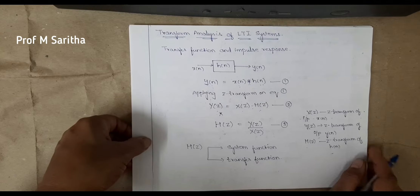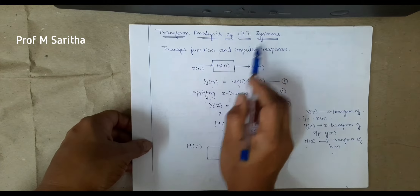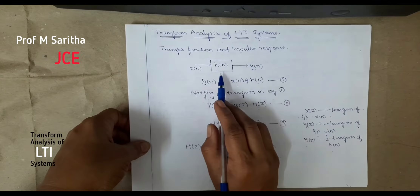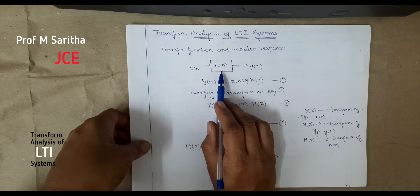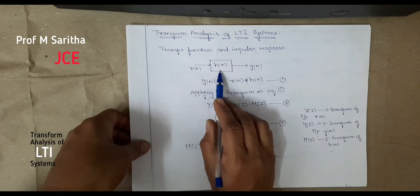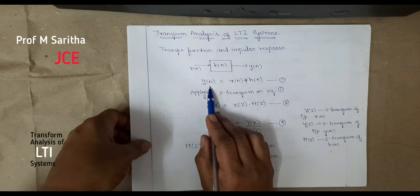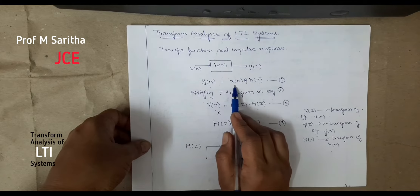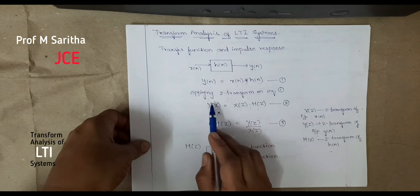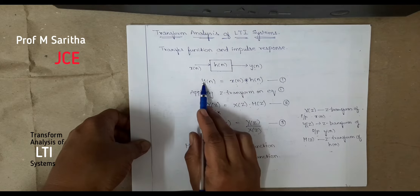Good morning students. Let us see the Z-transform analysis of an LTI system — the transfer function and the impulse response. Let us take a system whose impulse response is h(n), input is x(n), and output is y(n). So output y(n) is given as x(n) convolved with h(n). Let us take this as equation 1.